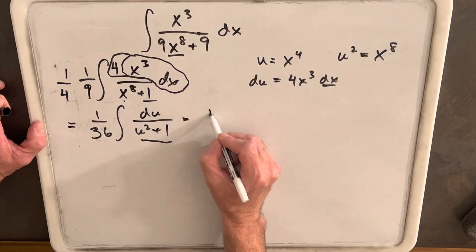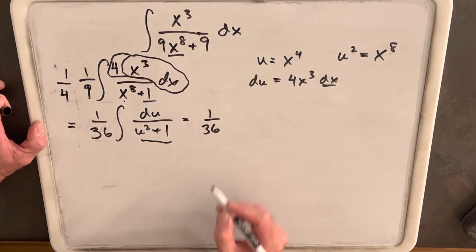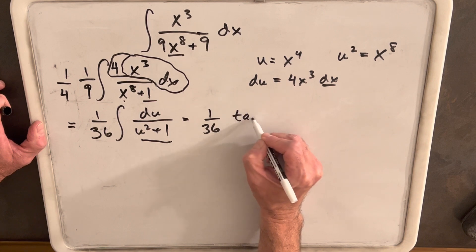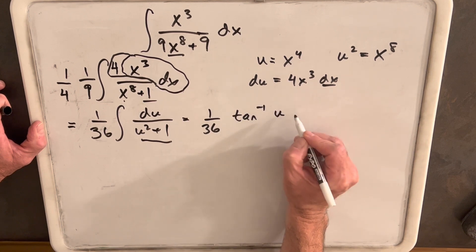So, we'll have 1/36. And then, integrating this, we'll have inverse tangent of u plus c.